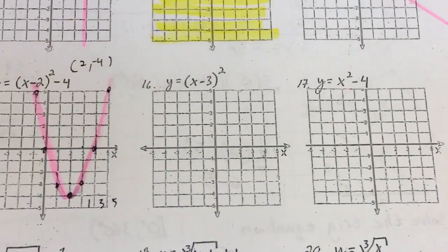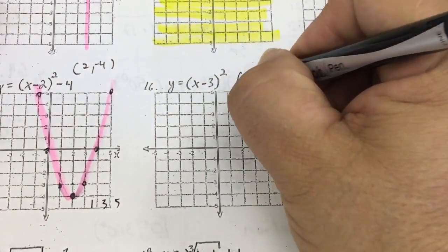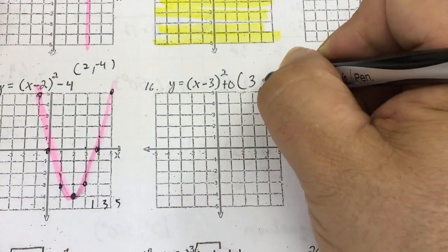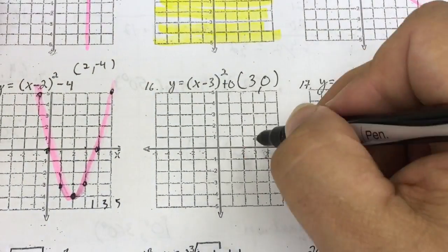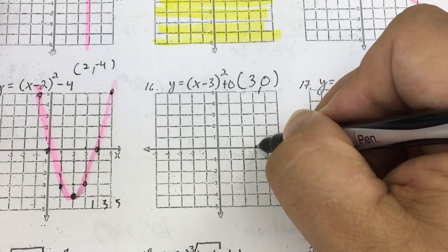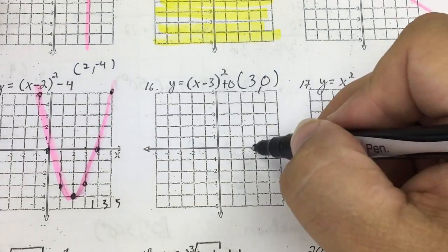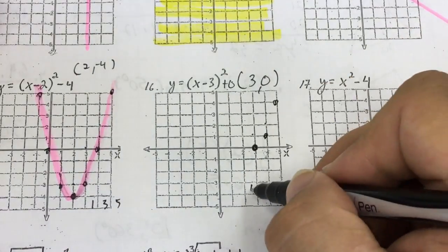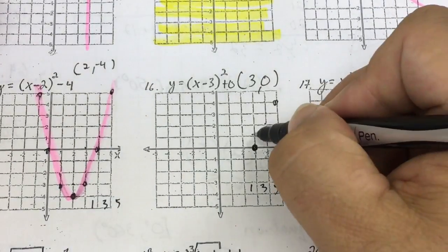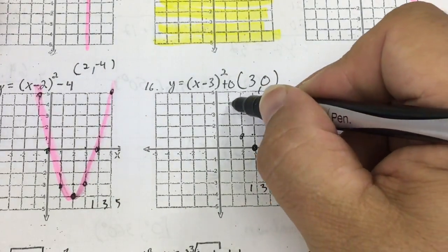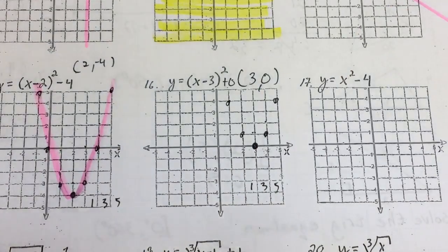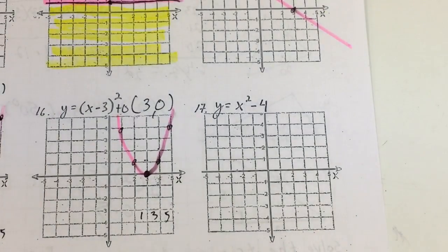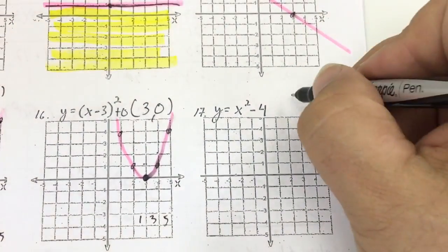Another parabola — some people find this one a little tricky. The vertex is opposite same, but there's no vertical shift, so it's just (3, 0) — a horizontal shift right 3. I use the 1, 3, 5 pattern: up 1 over 1, up 3 over 1. I connect the dots.